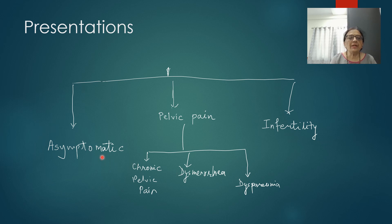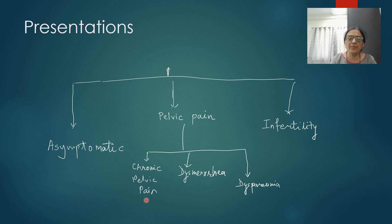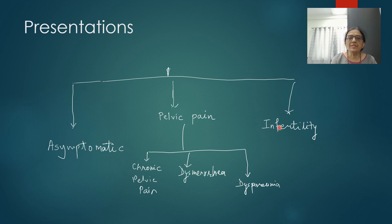Endometriosis can be asymptomatic or it can be associated with two major presentations: first is pelvic pain and second is infertility. Pelvic pain can present as chronic pelvic pain — defined as pain in the lower abdomen below the umbilicus lasting more than six months — it can present as dysmenorrhea or as dyspareunia. So pelvic pain and infertility are the two major presentations of this disease.